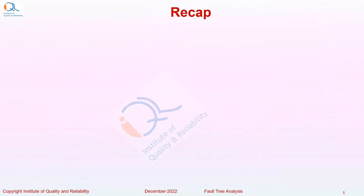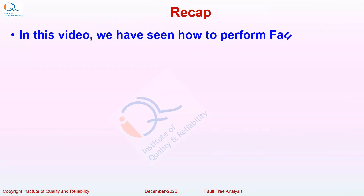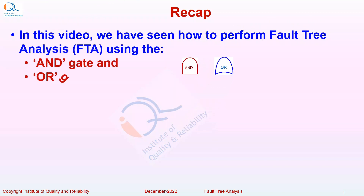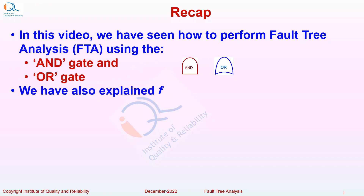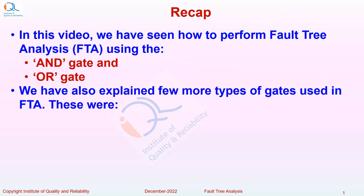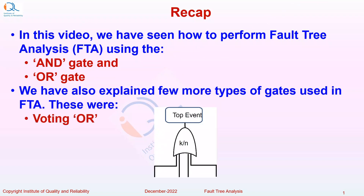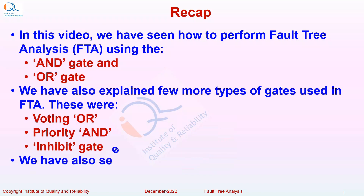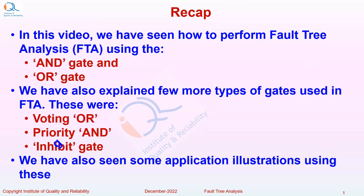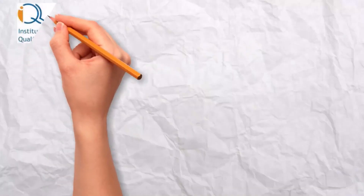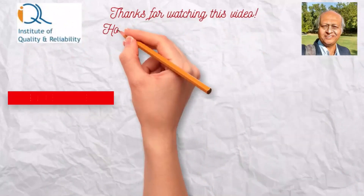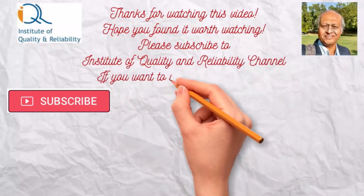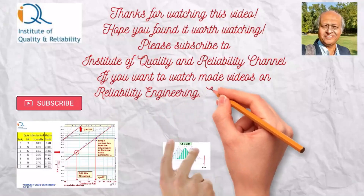Let us do a quick recap. In this video, we have seen how to perform fault tree analysis using the AND gate and OR gate. We also explained additional gate types: Voting OR, Priority AND, and Inhibit gate, along with application illustrations. Thanks for watching. Please subscribe to Institute of Quality and Reliability if you want to watch more videos on Reliability Engineering, Six Sigma, and Quality Engineering.